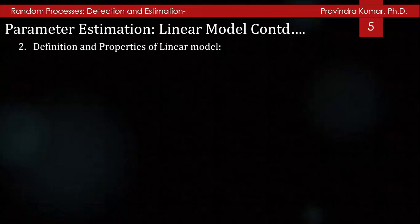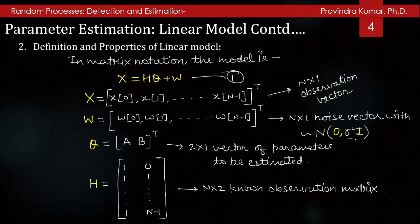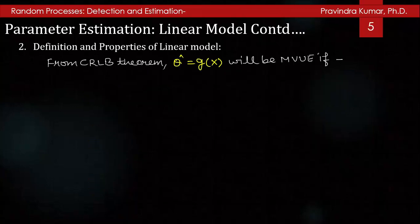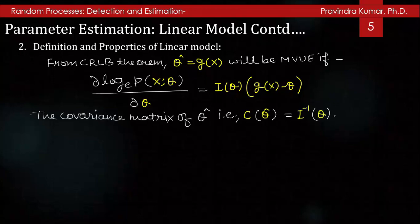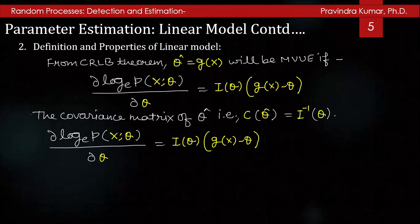The data model x = Hθ + ω is termed the linear model. From the CRLB theorem, θ̂ = g(x) will be the MVUE if ∂ log p(x; θ)/∂θ = I(θ)[g(x) − θ] for some function g, and the covariance matrix of θ̂, c(θ̂), equals I⁻¹(θ), the inverse of the Fisher information matrix. To determine if this condition is satisfied for the linear model, we evaluate ∂ log p(x; θ)/∂θ.